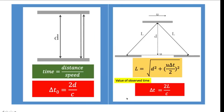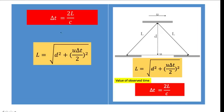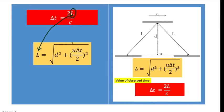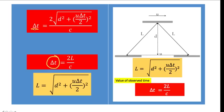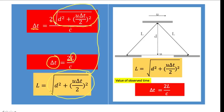To derive the time dilation formula, we synchronize the two formulas. Focusing on the second scenario: delta t = 2L/c. We substitute the expression for L into this formula. So delta t equals 2 times √(d² + (u·delta t / 2)²) all over c. We also know from the proper time formula that delta t₀ = 2d/c, so we can solve for d: multiplying both sides by c and dividing by 2 gives d = c·delta t₀ / 2.